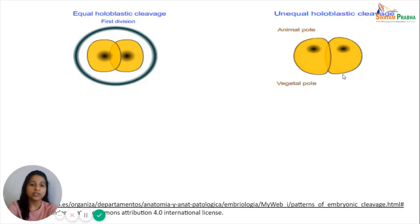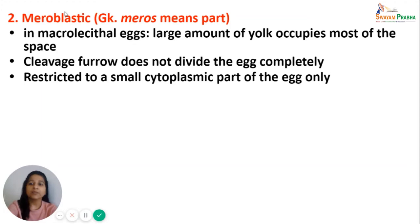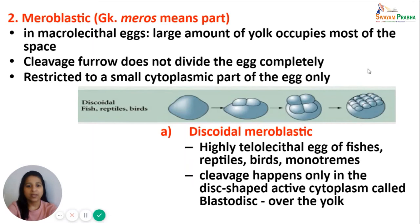The next type of cleavage based on the amount of yolk is meroblastic cleavage. 'Meros' means part. This occurs in macrolecithal eggs in which a large amount of yolk occupies most of the space. In meroblastic cleavage, the cleavage furrow does not divide the egg completely — only a partial division occurs, restricted to a small cytoplasmic part of the egg. The first type of meroblastic cleavage is discoidal cleavage, seen in highly telolecithal eggs of fishes, reptiles, birds, and monotremes.